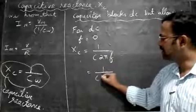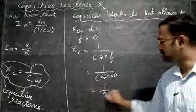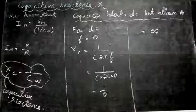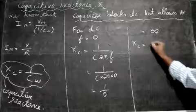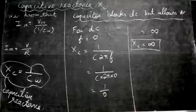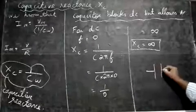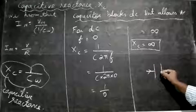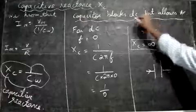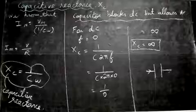Substituting f = 0 into XC = 1/(C · 2π · 0), we get 1/0, which equals infinity. So the capacitive reactance XC = infinity for DC. This means the capacitor provides infinite resistance to DC voltage, so direct current cannot pass through it — the capacitor blocks DC. This is very important for AC circuits containing only a capacitor.